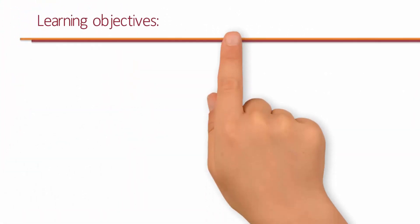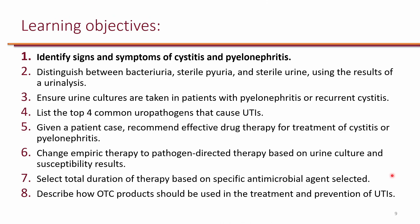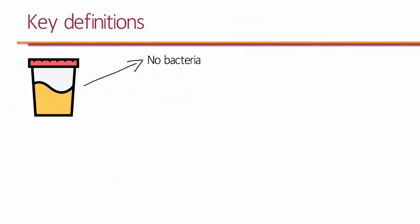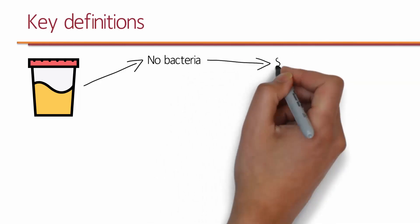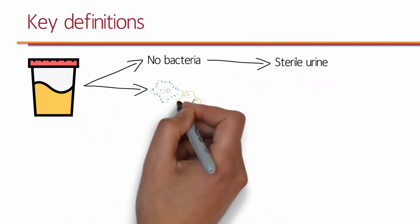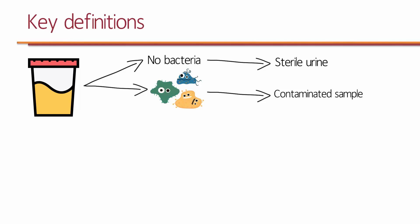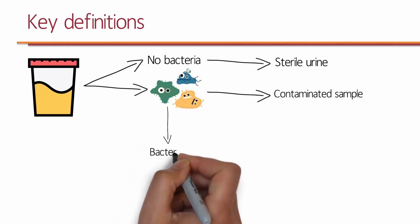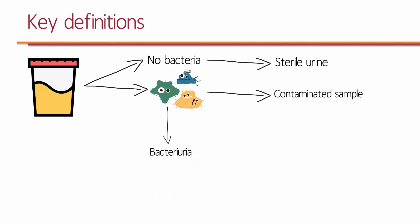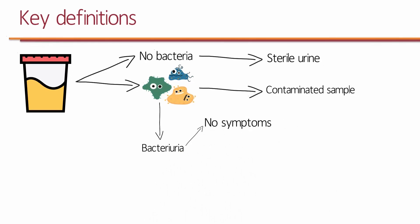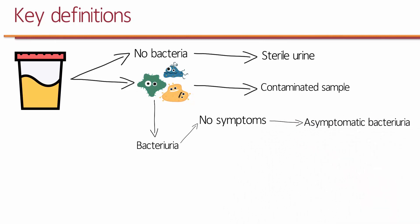The first learning objective is to identify signs and symptoms of cystitis and pyelonephritis. When you get a urine sample from a patient, for most individuals there will be no bacteria — urine is supposed to be sterile, especially in men. If bacteria are found in the urine sample, this could be due to contamination from the patient's skin or the environment. Once contamination is ruled out, the presence of bacteria in the urine is called bacteriuria. If a patient with bacteriuria has no symptoms, we call this asymptomatic bacteriuria, which does not need to be treated in most patients.